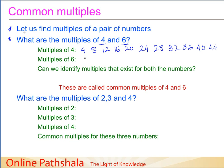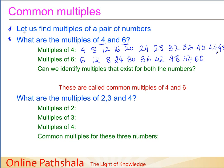Now let us write the multiples for 6. So we have 6, 12, 18, 24, 30, 36, 42, 48, 54, and 60. So these are the multiples of 6.